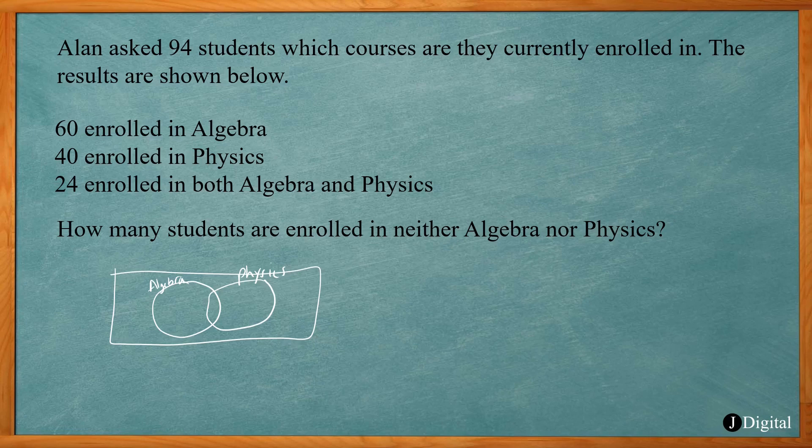We know that 24 are in both, so that goes in the middle here. Now algebra needs to add up to 60, and we already have 24 here. So that's going to leave us 36 that enrolled just in algebra. So 36 plus 24 gives us the 60.